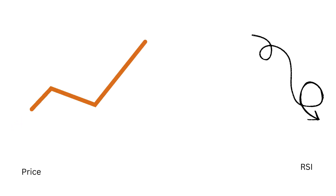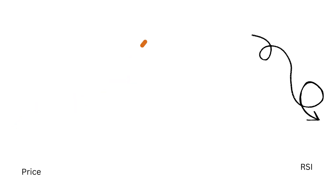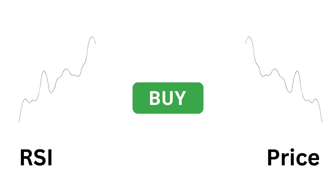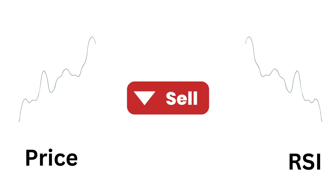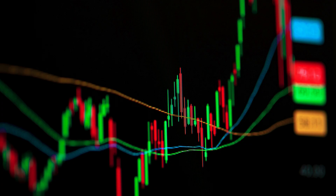So, what is a divergence? Divergence occurs when the price of an asset is moving in one direction, but the RSI is moving in the opposite direction. There are two types of divergences. Bullish divergence: this happens when the price is making lower lows, but RSI is making higher lows — it could be a signal to buy. Bearish divergence: this occurs when the price is making higher highs, but RSI is making lower highs — it could be a signal to sell. These divergences often signal that a price reversal is on the horizon.